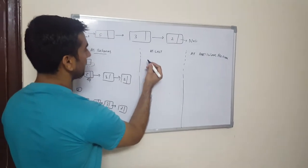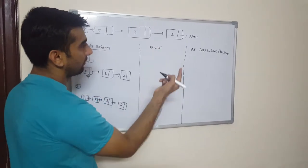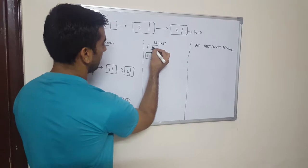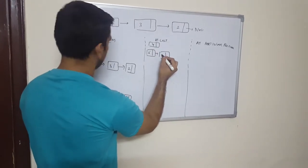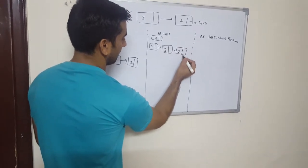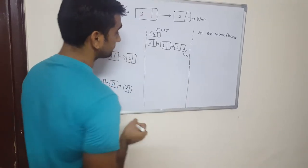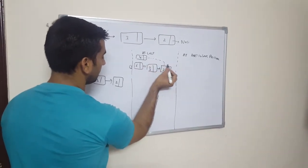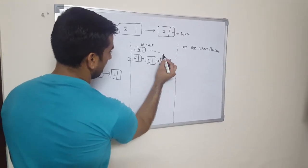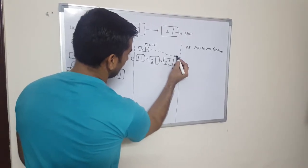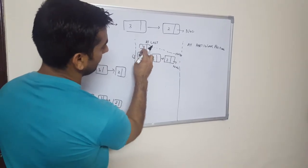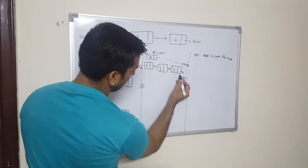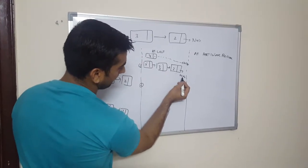For inserting at the last position, again two operations will be done. Assuming the same example — this is the node to be inserted and this is our existing linked list. This is my last node and it is pointing to null. In the first operation, the next pointer of the new node will point to null, because this node will become the last node since we are inserting at the end.